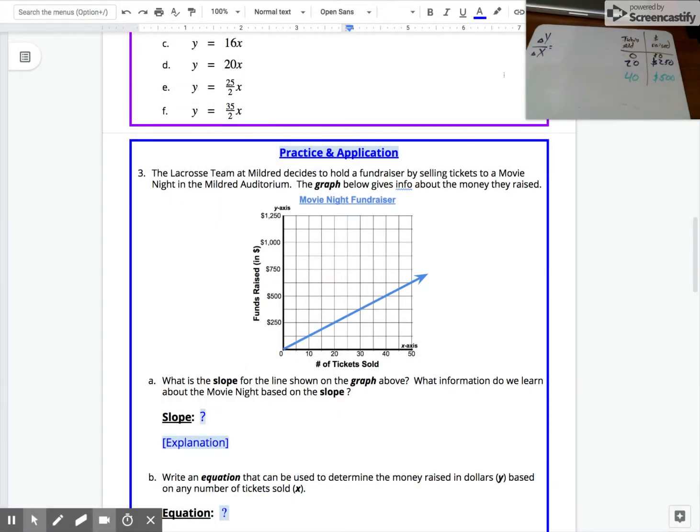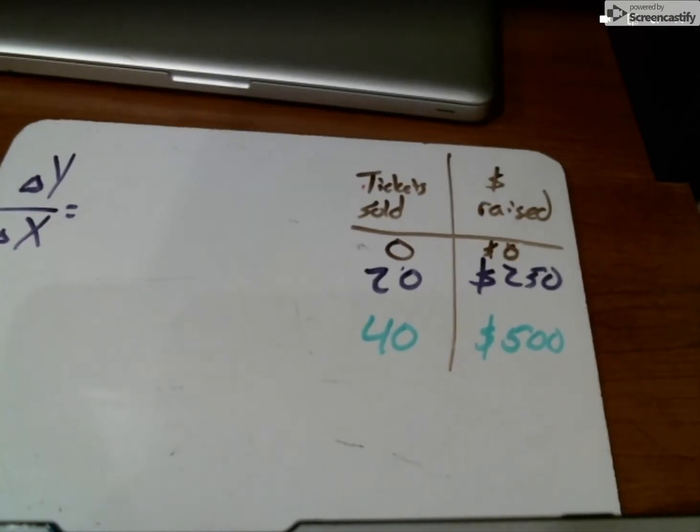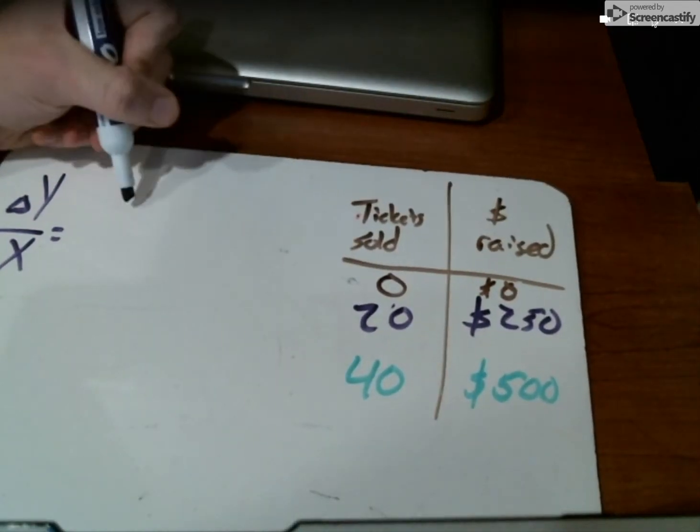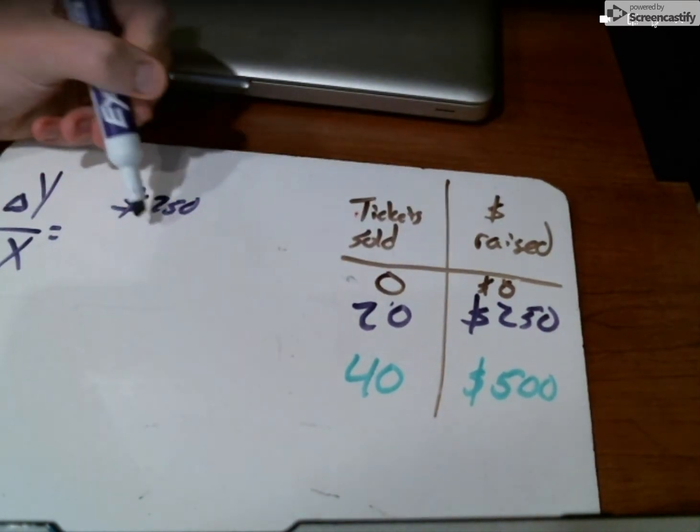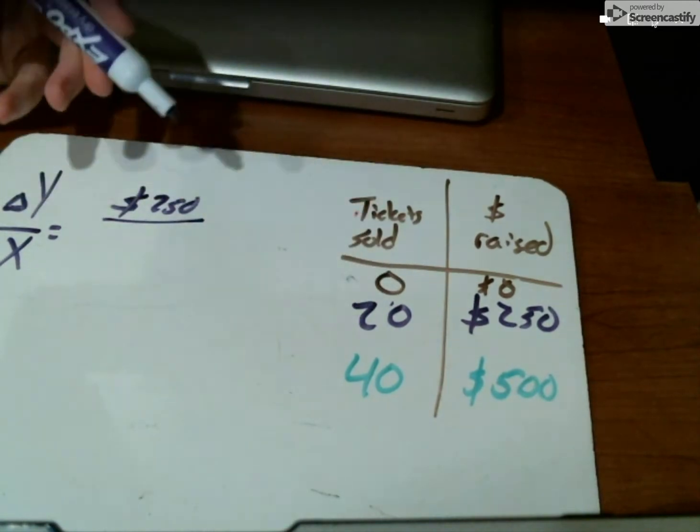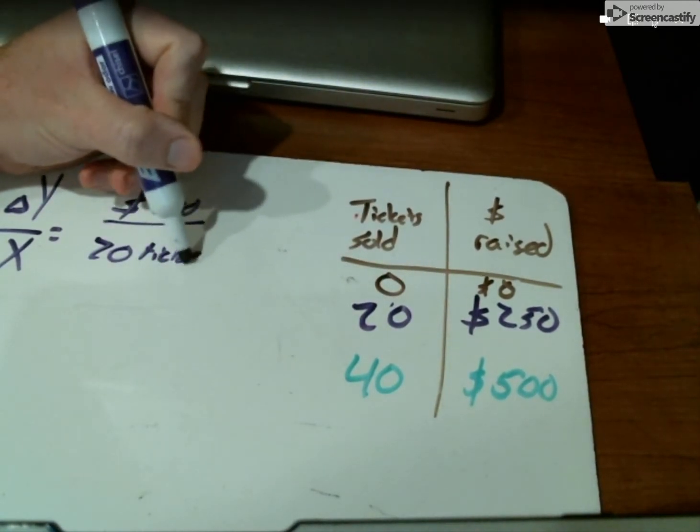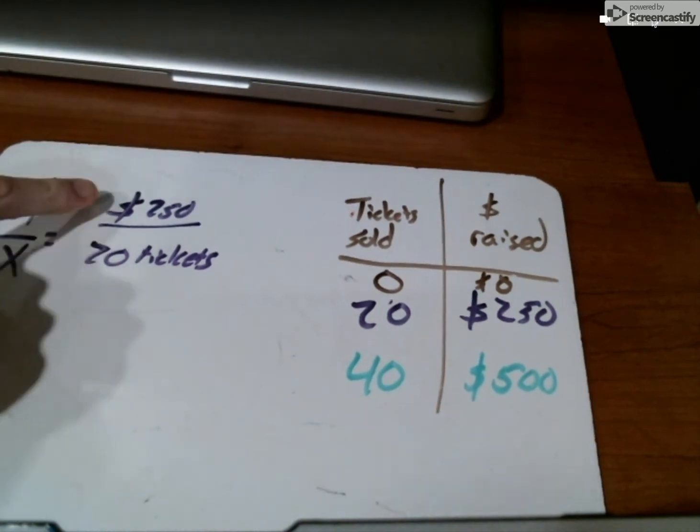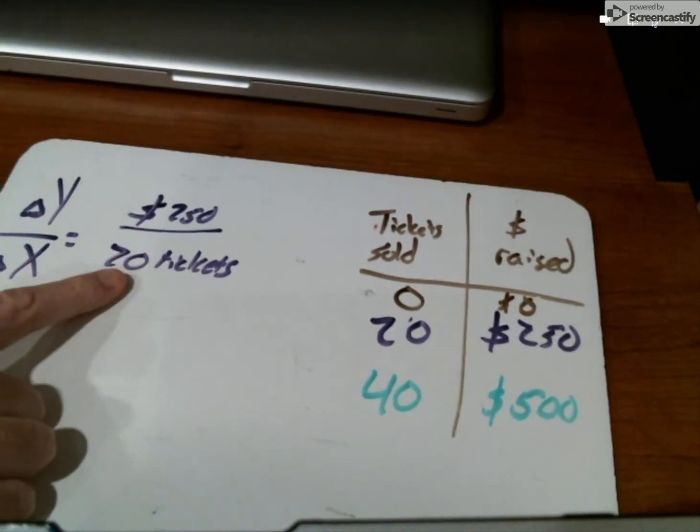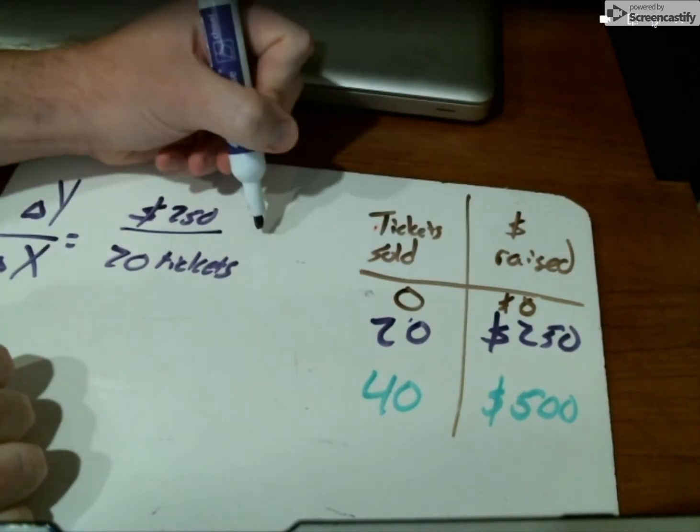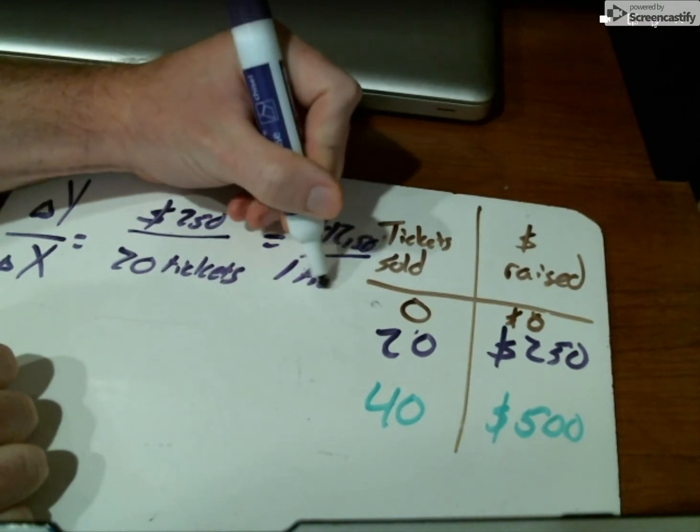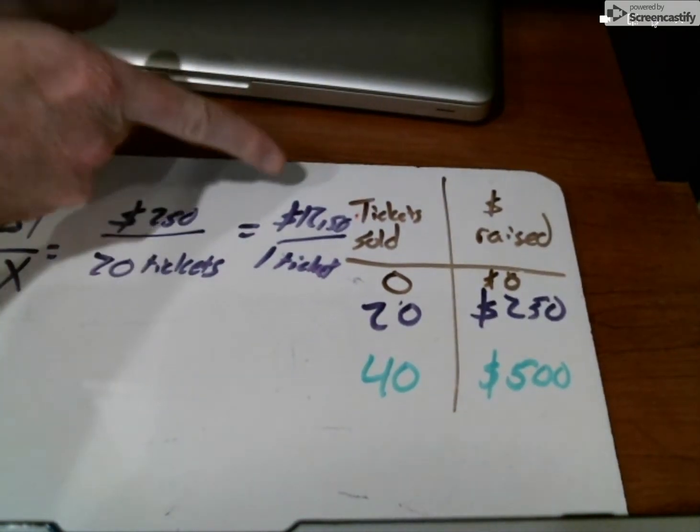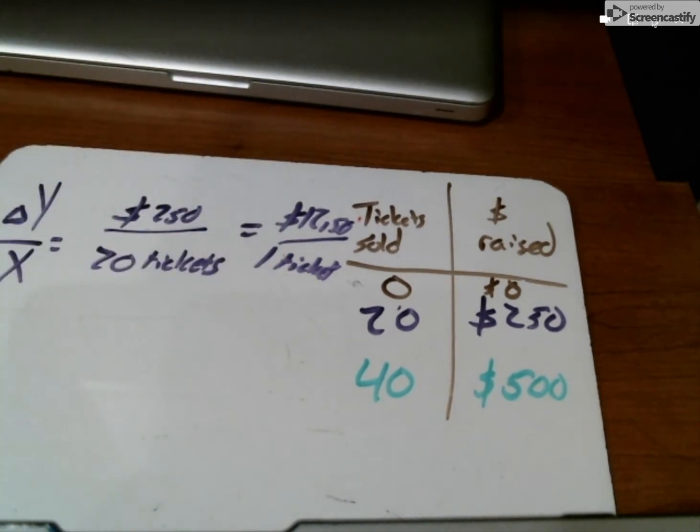We'll put that whiteboard into full screen to look at how to find the slope. If we're doing y divided by x, it's 250 dollars, because we started at zero dollars and went up to 250 dollars. For x we went from 0 to 20 tickets. 250 divided by 20 shows us twelve dollars and fifty cents for every one ticket when we simplify.